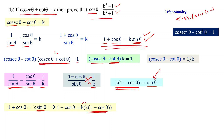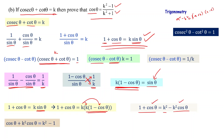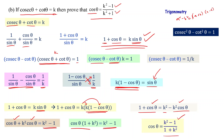Expanding: k times k gives k squared, so 1 plus cos theta equals k squared minus k squared cos theta. Rearranging cos theta terms to one side: cos theta plus k squared cos theta equals k squared minus 1. Factoring: 1 plus k squared times cos theta equals k squared minus 1. Therefore, cos theta equals k squared minus 1 divided by 1 plus k squared, which is exactly what we were asked to prove: cos theta equals k squared minus 1 divided by k squared plus 1.